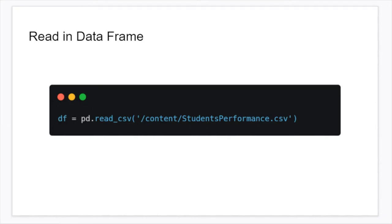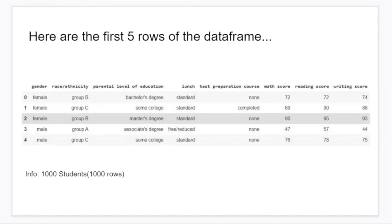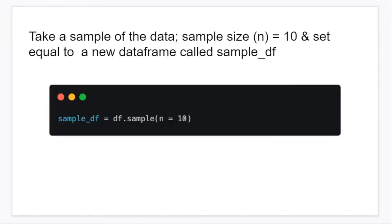So now when we call data frame dot head, so df dot head, that's going to print out the first five rows of the data frame, and this is what it looks like. For some background information, this data frame is actually made up of 1,000 rows, or in other words, 1,000 students. So because of that, we're going to take a sample of the data, and just for educational and graphing purposes, we're going to only take 10 students, and we're going to set this equal to a new data frame called sample_df.